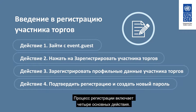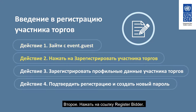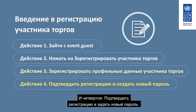There are four key actions to the registration process: 1. Log in using generic credentials. 2. Click on the Register Bidder link. 3. Register Bidder Profile details. 4. Confirm registration and create a new password.